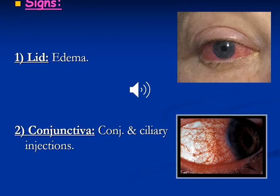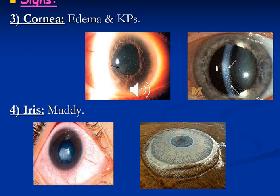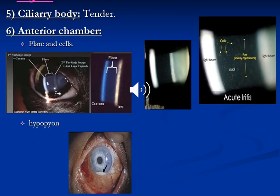What are the signs of uveitis? Number one, lid edema, which is usually mild. Number two, circumcorneal ciliary injection. Number three, corneal edema and keratic precipitates. Number four, muddy iris — the iris becomes like mud with loss of iris pattern. Number five, tenderness of the ciliary body. Number six, anterior chamber flare and cells, or hypopyon in severe cases of inflammation.